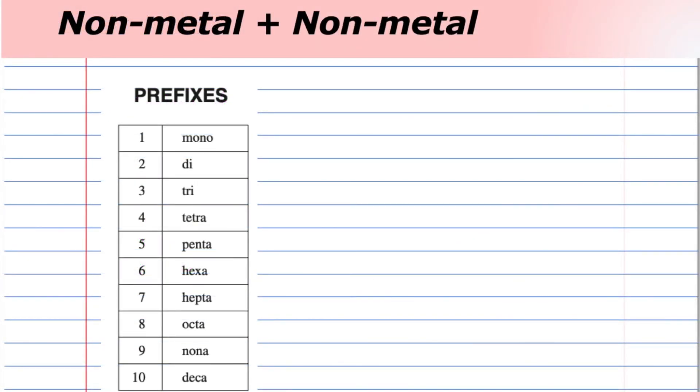The key takeaway then for using prefixes in a compound is that compound is made up of non-metals.